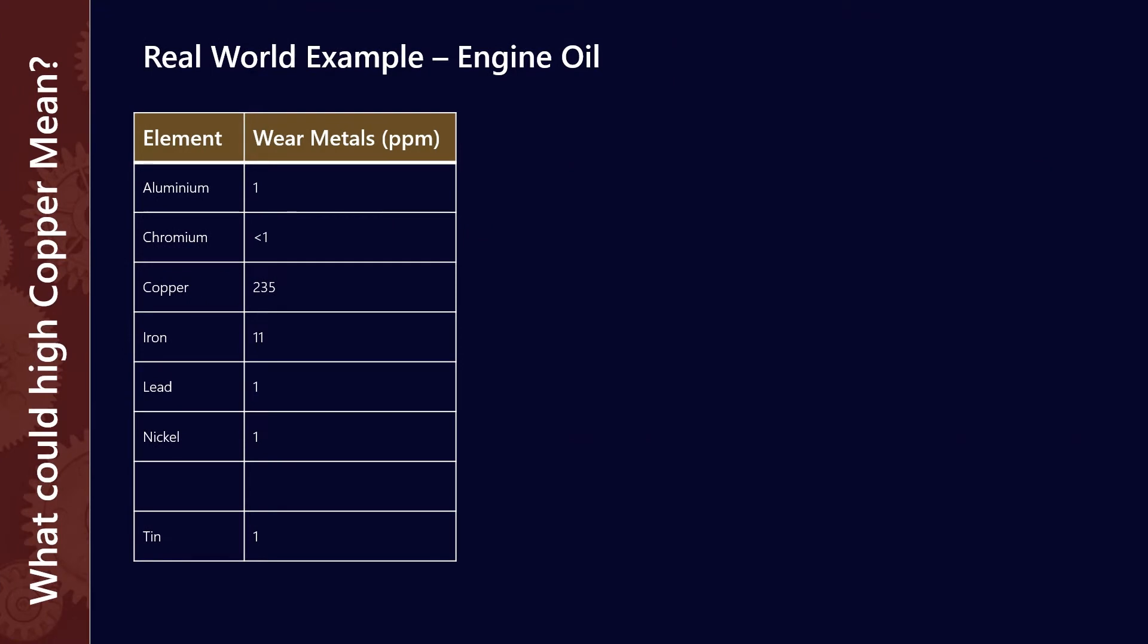Let's take a real world example of an engine oil. We're going to look at just a single sample but look at how we need to use some of the other results to give us more context and some different scenarios about how we might use those results to get some more insights for our application. So one thing you'll notice here is I'm just showing the ICP elements and you'll see copper looks a little bit high.